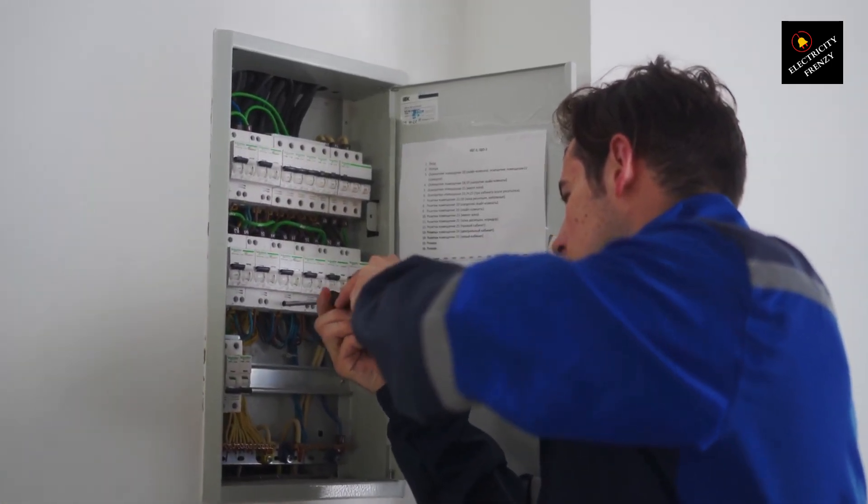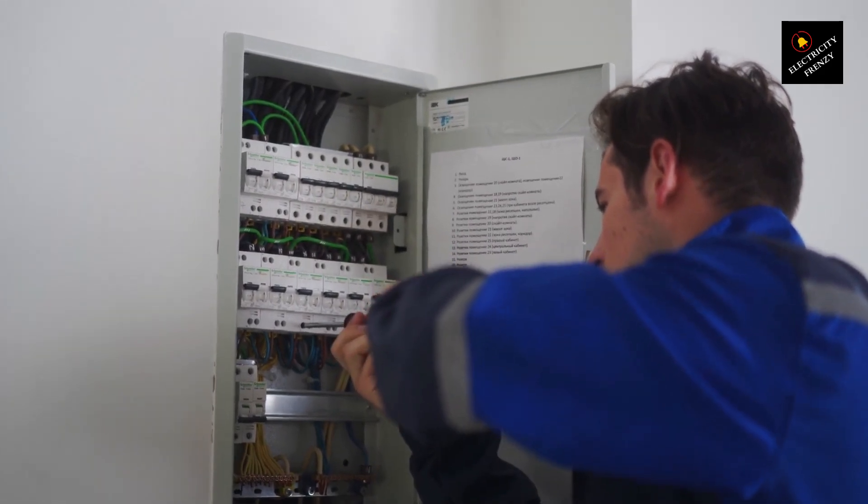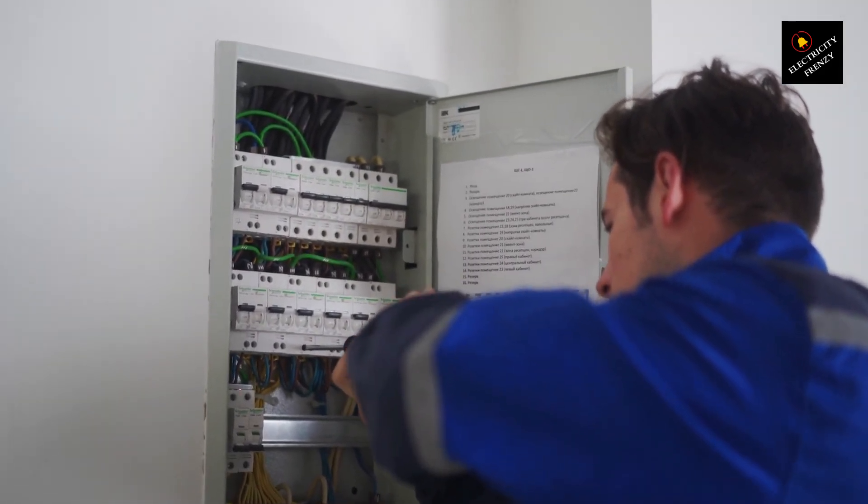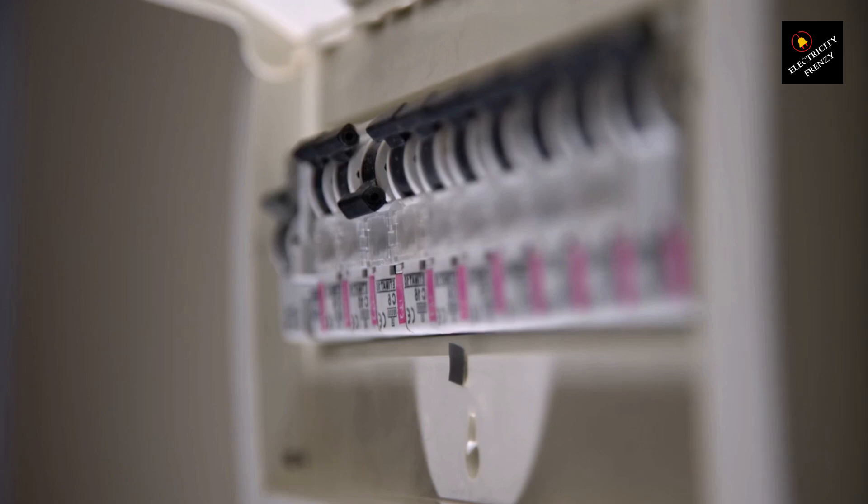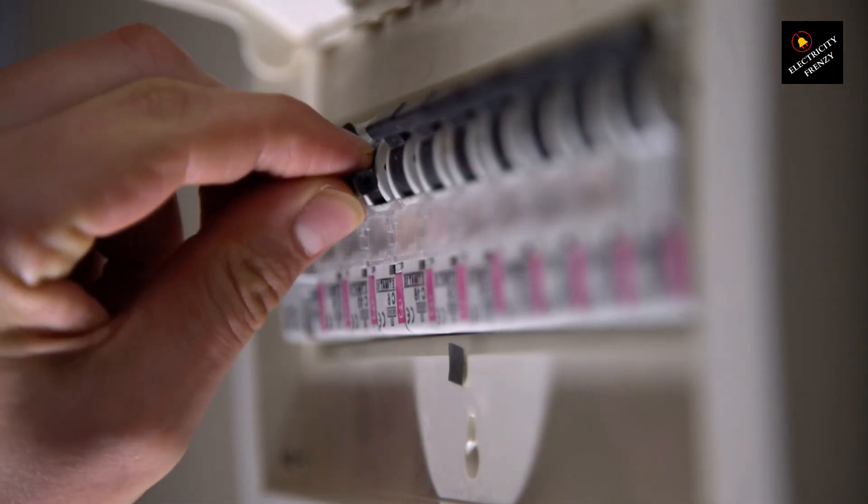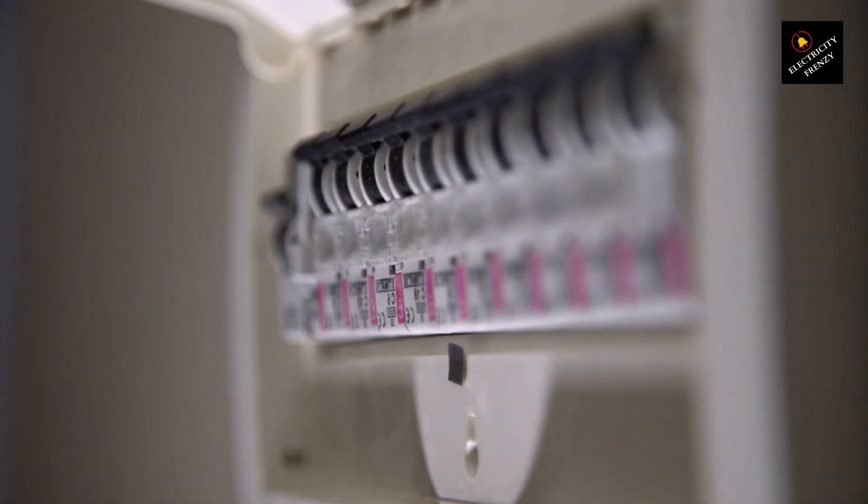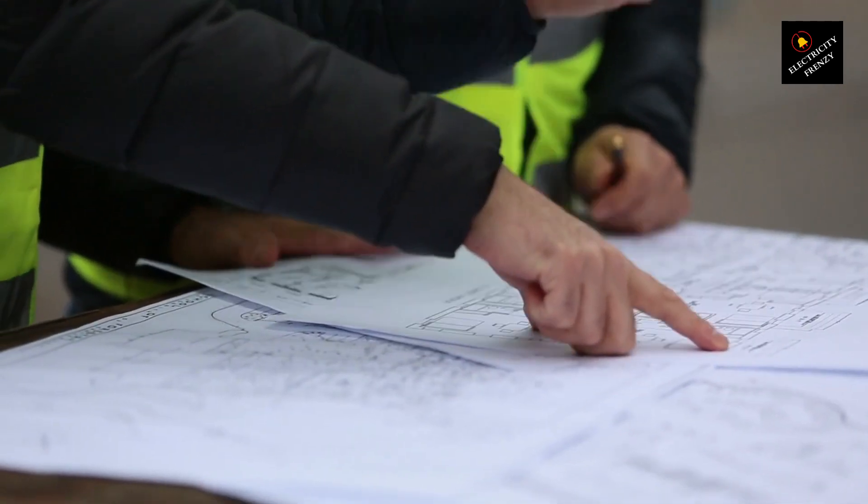One last tip before we wrap up. When your breaker trips, don't reset it immediately. If it's been tripped by an overload or a short circuit, the breaker needs a little time to cool off. Give it 5 to 10 minutes before trying again. If you keep resetting it immediately, you're playing electrical roulette.